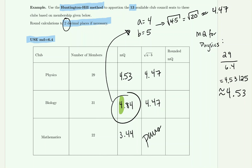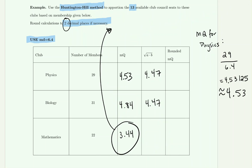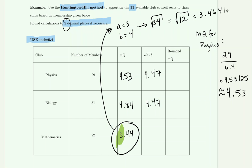For the mathematics club, the MQ value is 3.44. The integer part is 3, so A equals 3 and B equals 4. We look at the square root of 3 times 4, which is the square root of 12. Typing this into the calculator gives 3.464101615, which rounds to 3.46 at two decimal places.